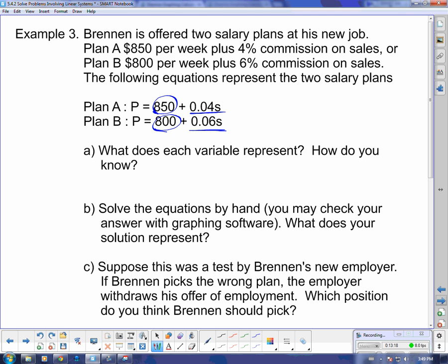So which does each variable represent? Well, P is total pay and S is sales, how much it sells. And how do we know that? Well, we know that because he gets 4% of the sales. So that has to multiply the S. And we know it's the sales because it multiplies by commission percent.